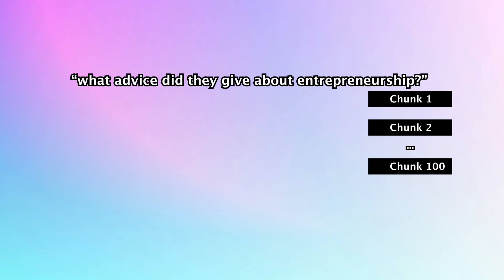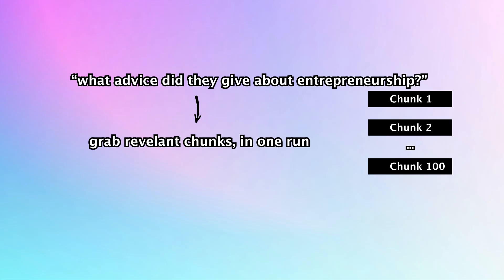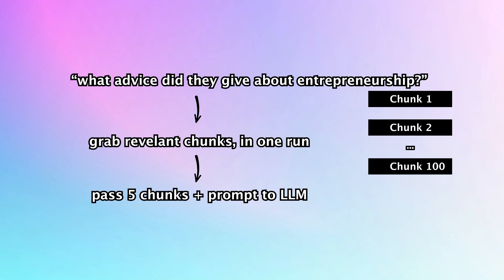So let's now talk about RAG. Imagine that the podcast is split into 100 chunks and stored in a vector database. Now when you ask 'what advice did they give about entrepreneurship?', RAG will grab similar chunks from the vector database in one run. You decide how many chunks — let's say five. So it will grab five chunks, pass them to the LLM and you get the response. But what if you need to grab 15 chunks because they talked about entrepreneurship way more? That's the problem — RAG will ignore them. It will only get the most relevant end chunks and everything else will be ignored.